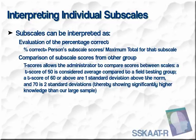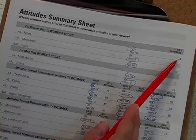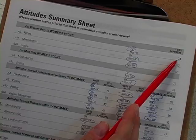A T-score of 50 is considered average compared to a field testing group. A T-score of 60 or above is one standard deviation above the norm. A T-score of 70 or two standard deviations shows significantly higher knowledge than the large sample. Attitudes have no weighted value. They are the person's perception of right or wrong and are used only for educational, clinical, or research purposes.